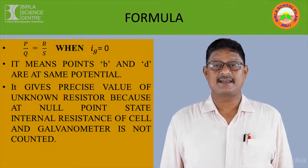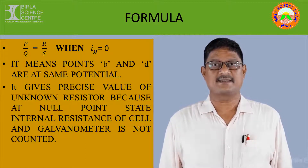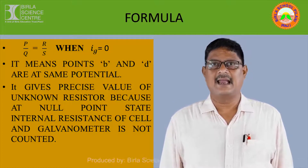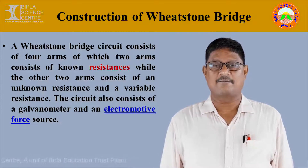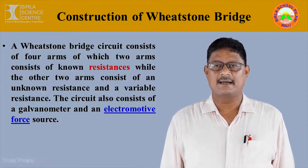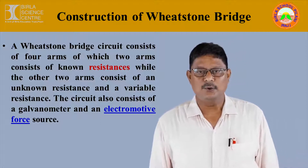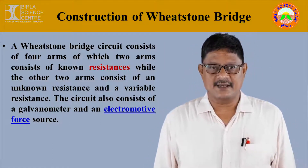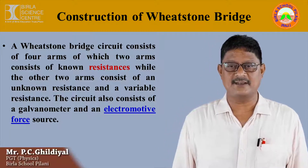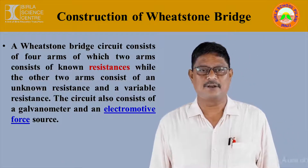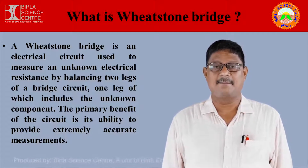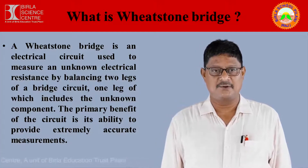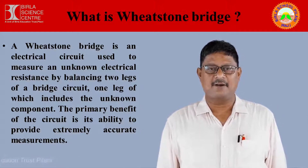It gives a precise value of the unknown resistor because at the null point state the internal resistance of the cell and galvanometer is not counted at all. A Wheatstone Bridge circuit consists of four arms, of which two arms consist of known resistance while the other two arms consist of unknown resistance, with a variable resistance connected across the fourth arm. The circuit also consists of a galvanometer and an electromotive force source. A Wheatstone Bridge is an electrical circuit used to measure an unknown electrical resistance by balancing two legs of a bridge circuit, one leg of which includes the unknown component.